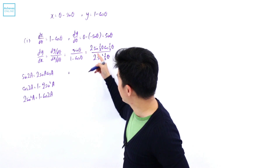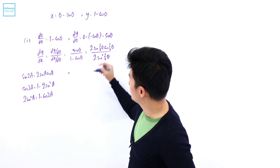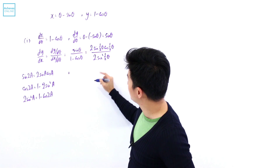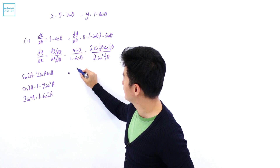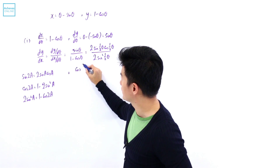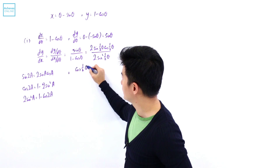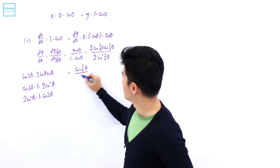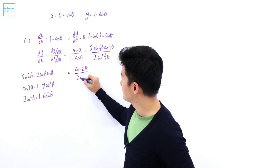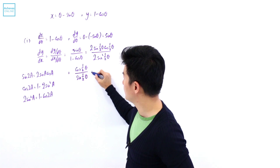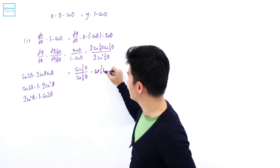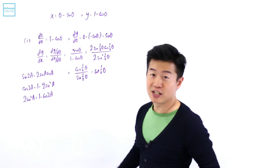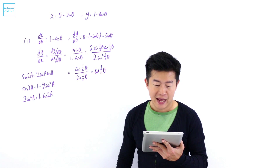That is why, after the cancellation, what we're left with is cosine(θ/2) divided by sine(θ/2), which is cotangent of half theta. And this is what the question wants us to show.